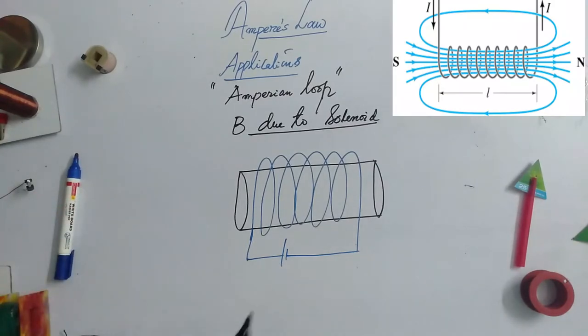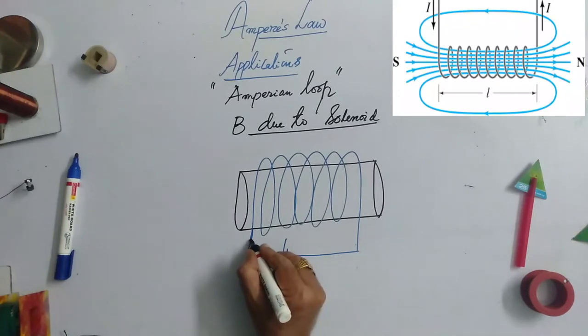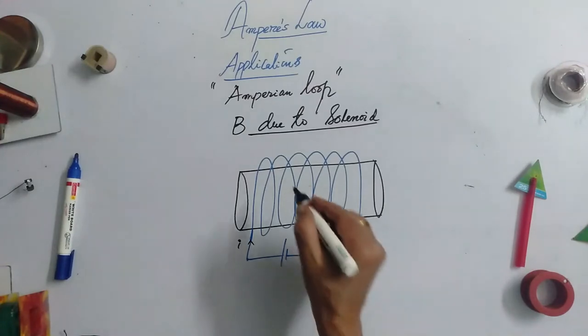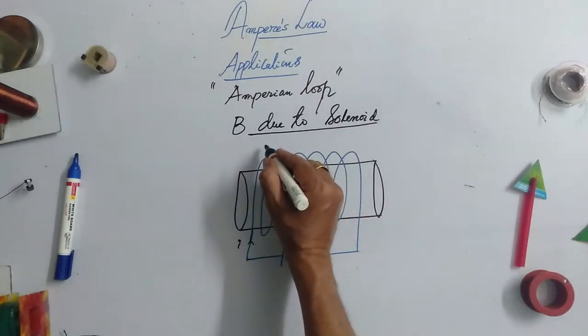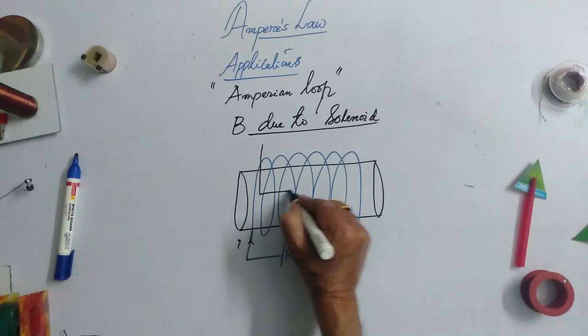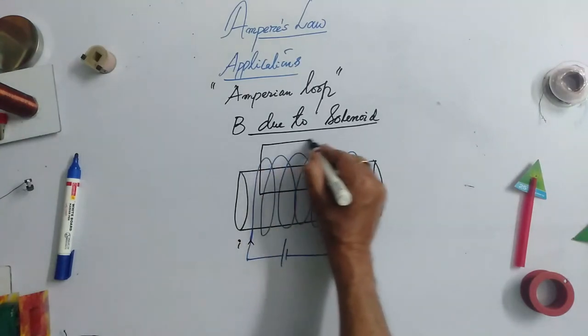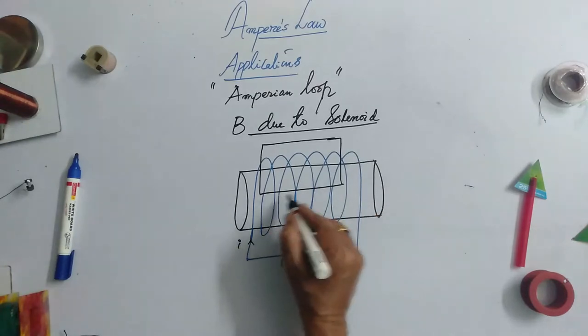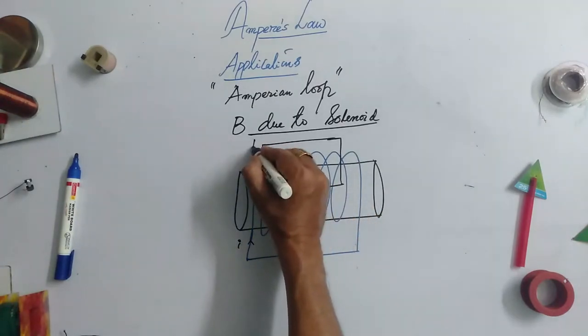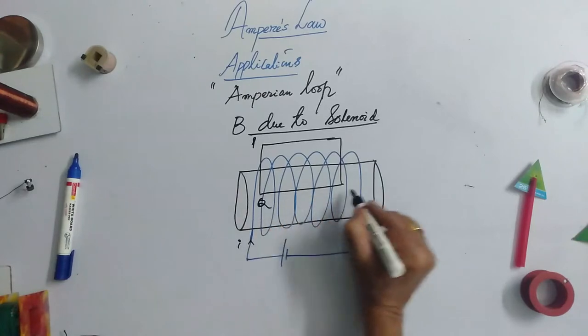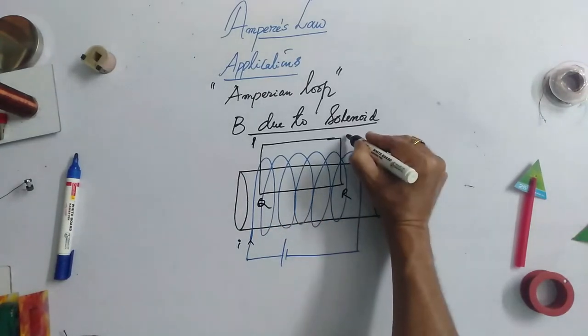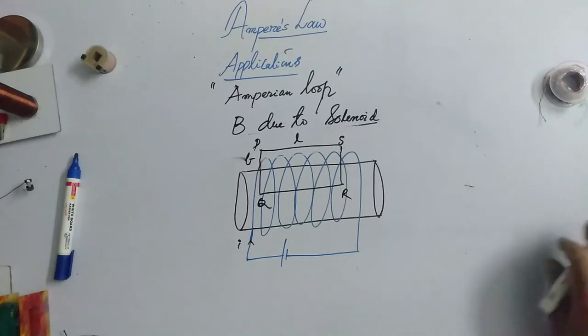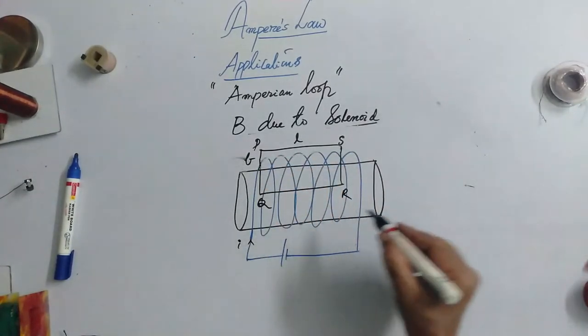Now, let's consider that current I is passing in this direction. Now you have to imagine an Ampere loop. So, I conveniently take this PQRS rectangular loop. Now, to apply Ampere's law for this Ampere loop,